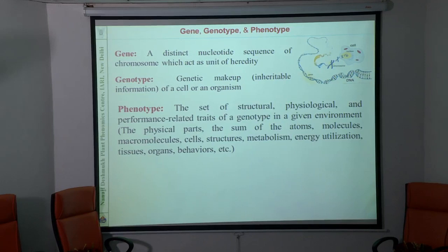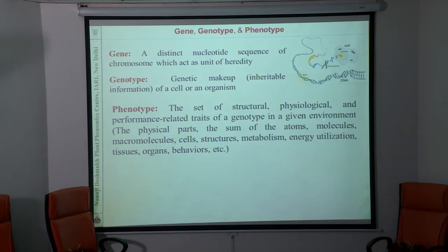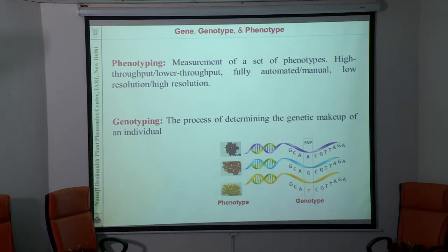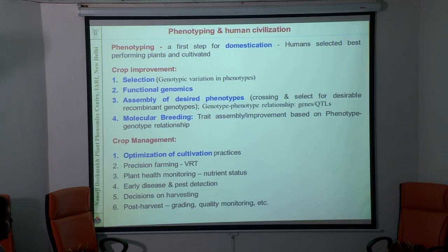It takes a lot of time. Among various tools used in this, phenotyping is the most time-consuming — it is a rate-limiting step. We already know what a gene, genotype, and phenotype is. Phenotype is the set of structural, physiological and performance-related traits of a genotype in a given environment. Phenotyping is nothing new — conventionally we do it from time immemorial. It is the measurement of a set of phenotypes. From the time of domestication we have been doing phenotyping, and based on that people selected certain species and tried several cultivation methods.